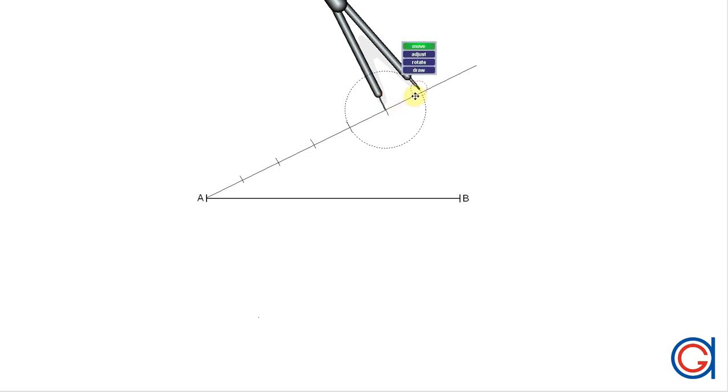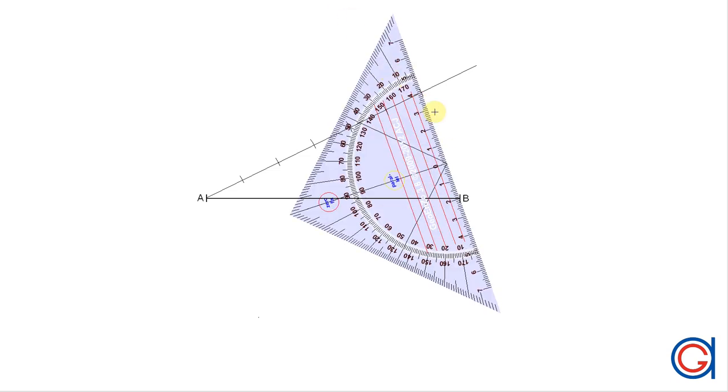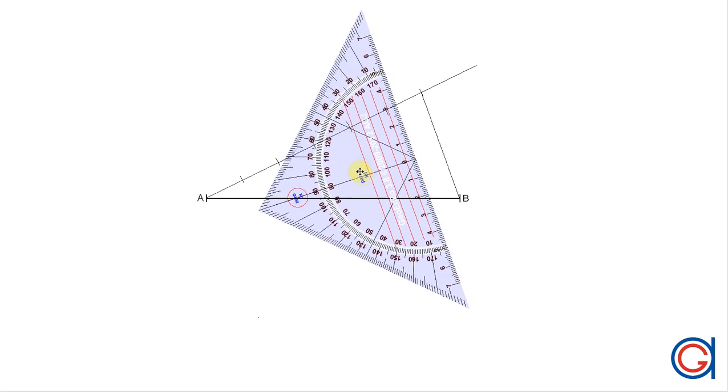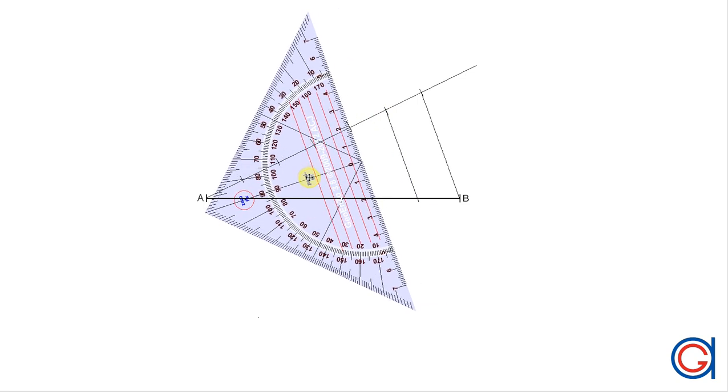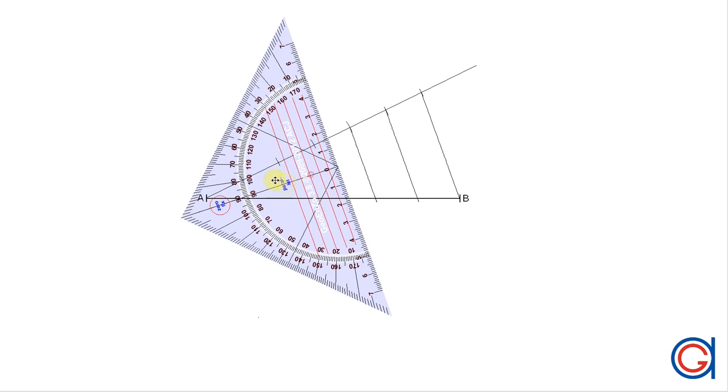When we have marked the six divisions we join the final division with point B. From now on we will draw parallel line segments to this line through the remaining divisions on the ray. You can do this using a pair of set squares for drawing the parallel lines. In this video we use this 45-degree set square with an inbuilt protractor.